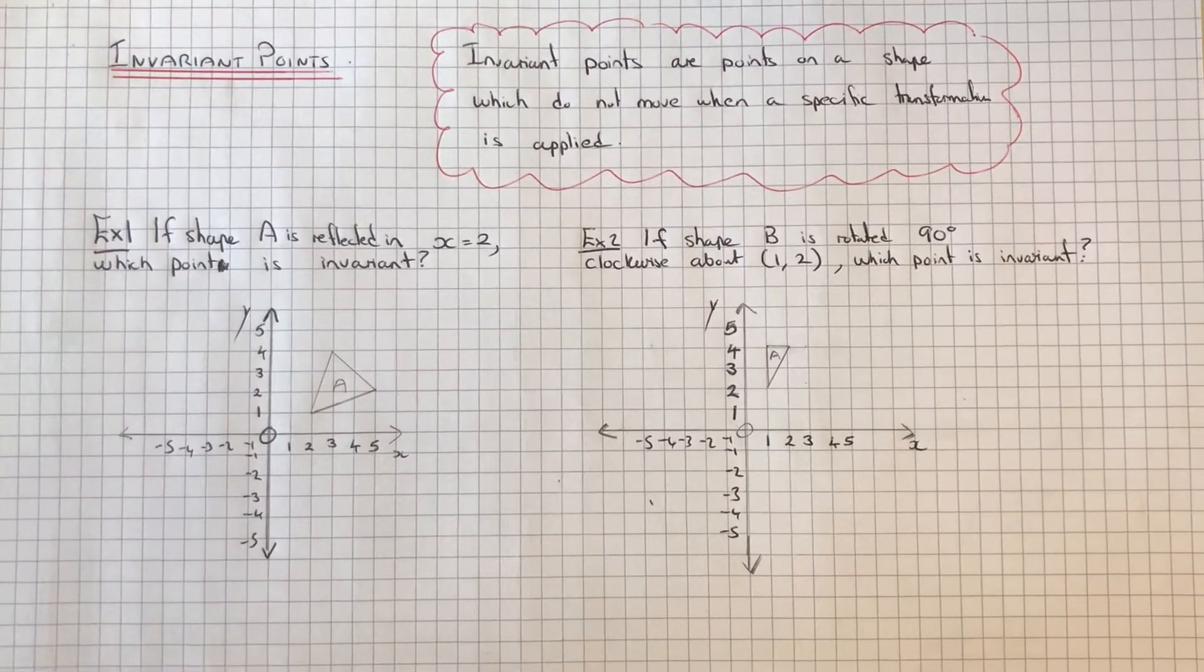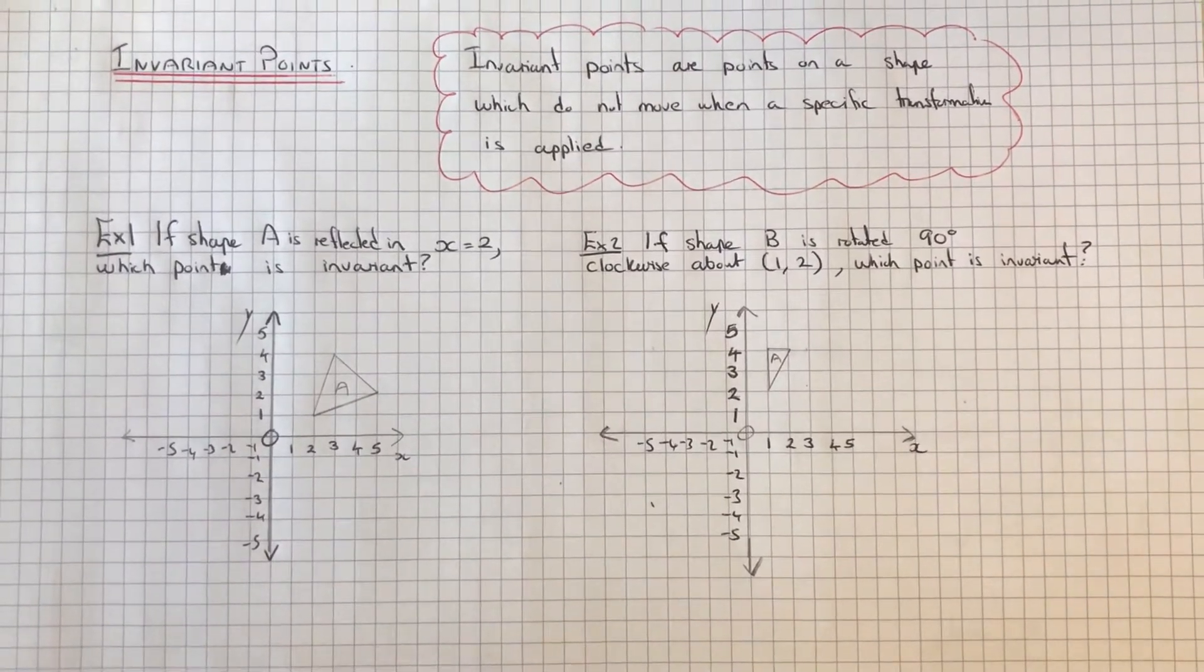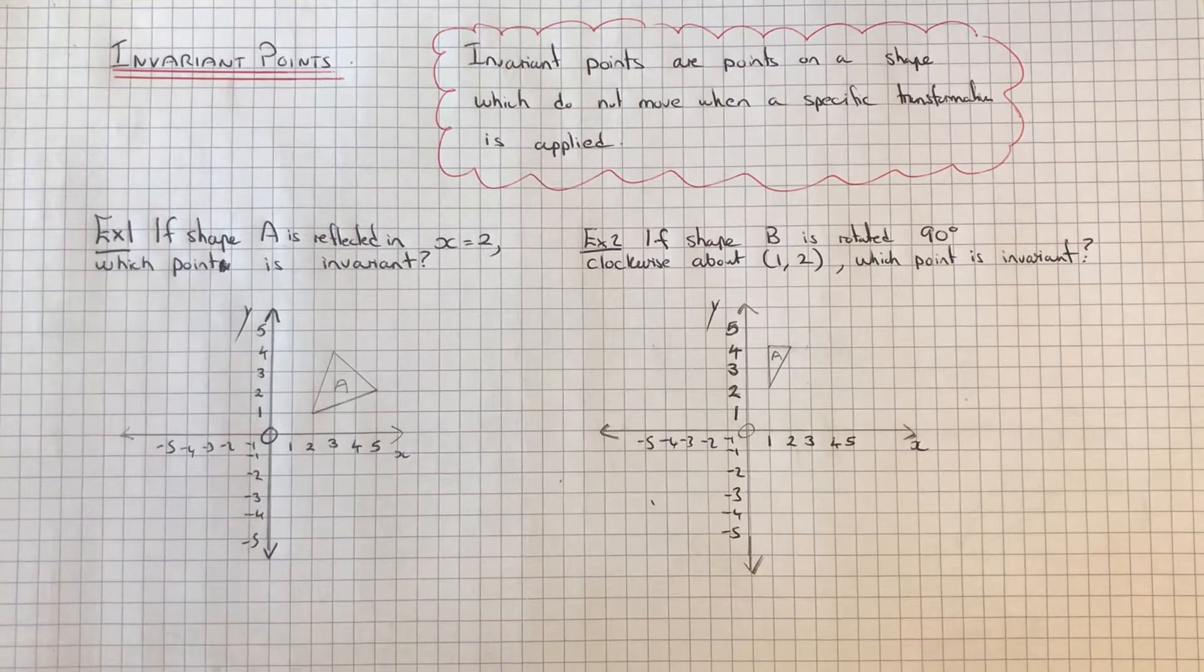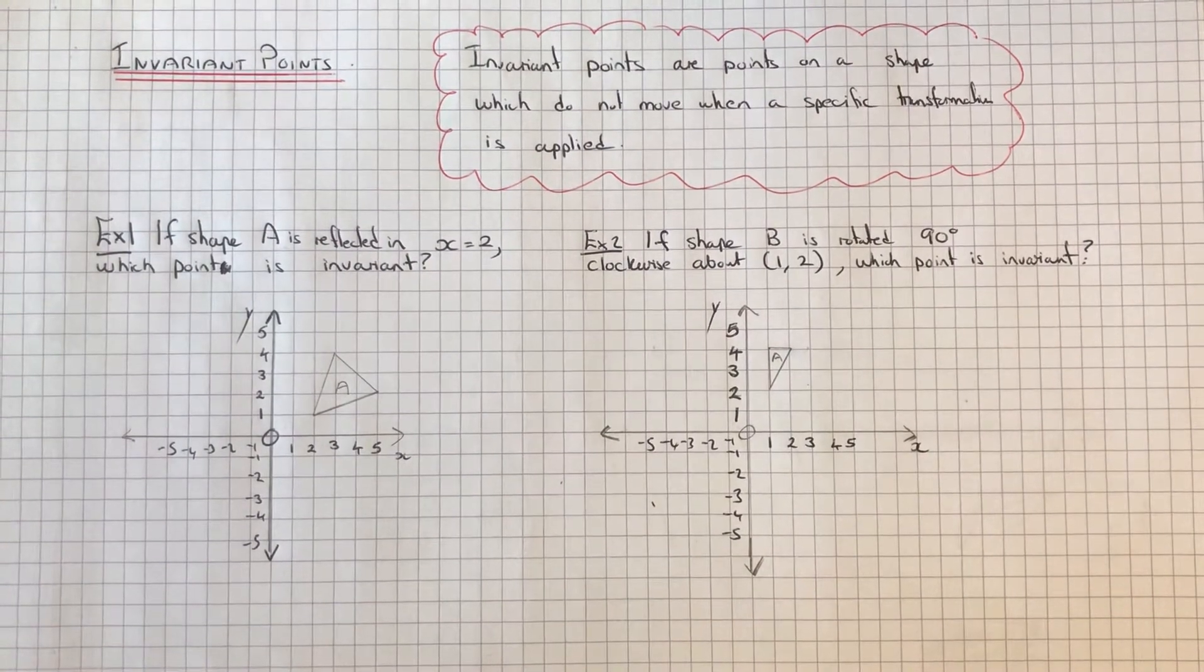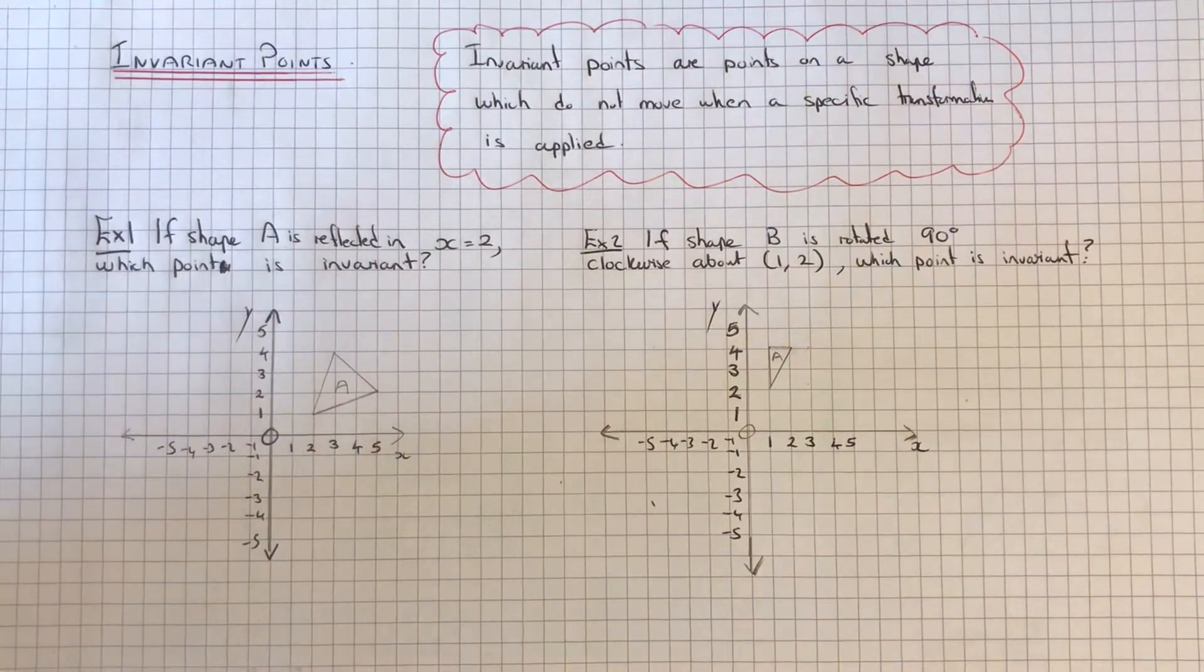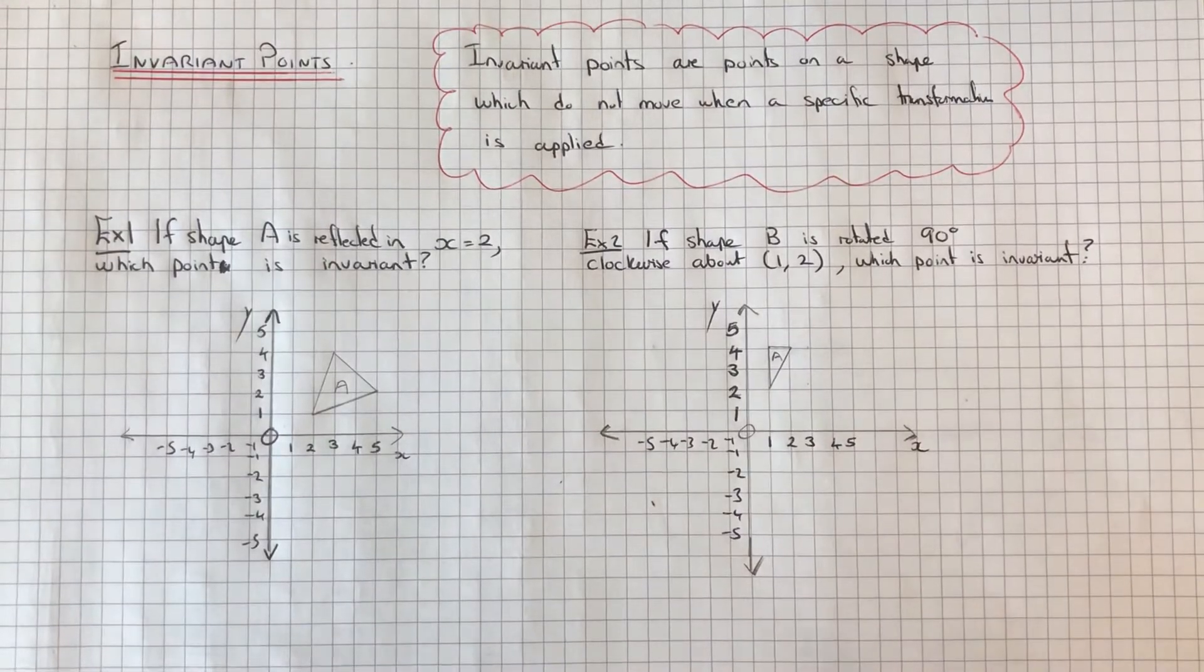Hi guys, welcome back. This is Maths 3000. Today we're going to be looking at invariant points. An invariant point is a point on a shape which does not move when a specific transformation is applied. Let's have